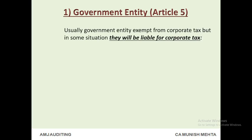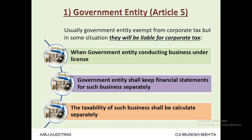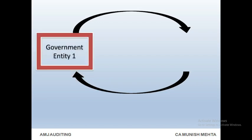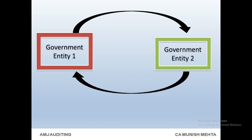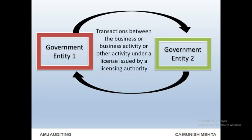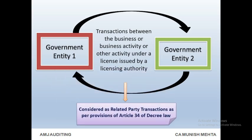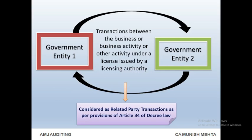Government Entity — Article 5. Usually a government entity is exempt from corporate tax, but in some situations they will be liable for corporate tax. Transactions between the business activity or other activity under a license issued by a licensing authority are considered as related party transactions as per provisions of Article 34 of Decree Law.